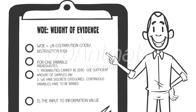Let us assume here that there are just two classes of credit: good and bad. We calculate the weight of evidence by taking the natural log of the ratio of the distribution of good credits to the distribution of bad credits. Watch out — the probabilities of one side over the other must never be zero, so always use a sufficient amount of samples.